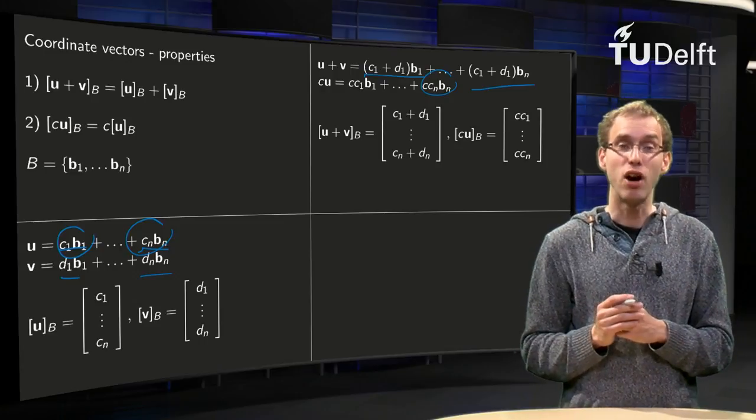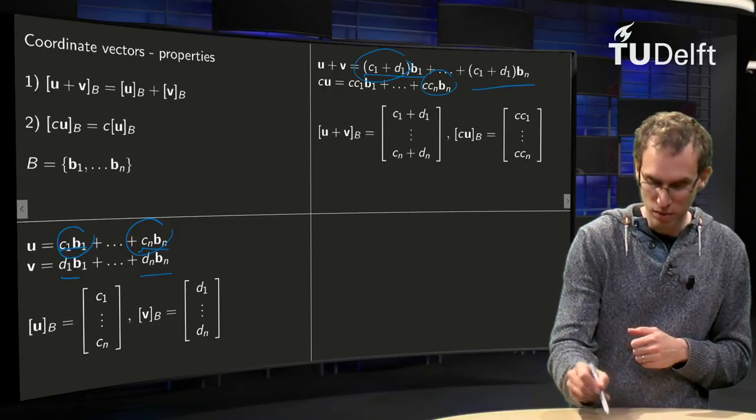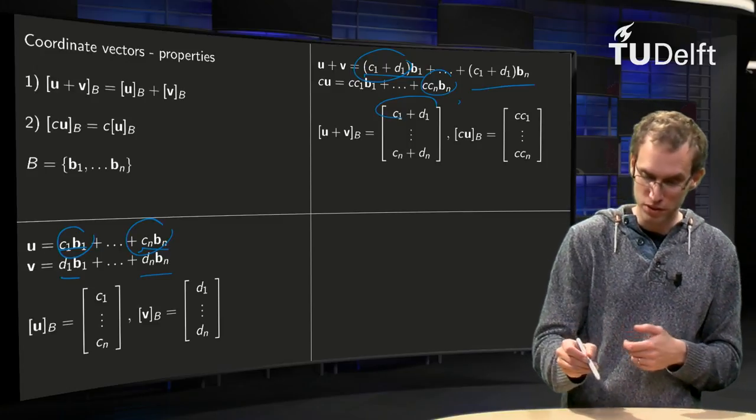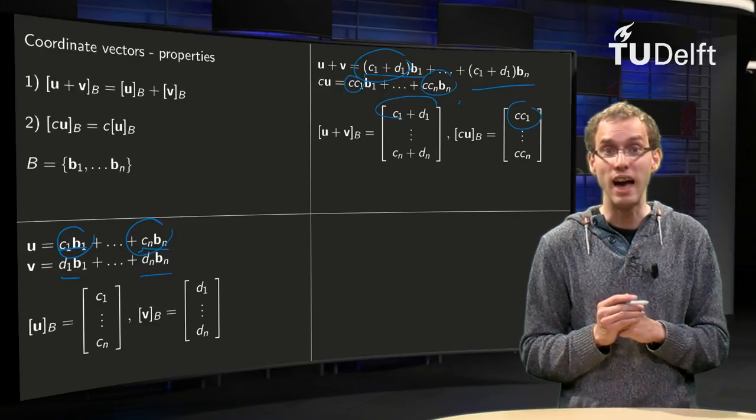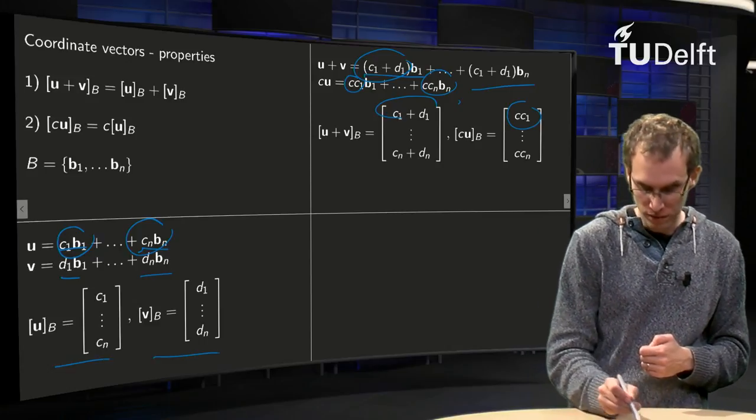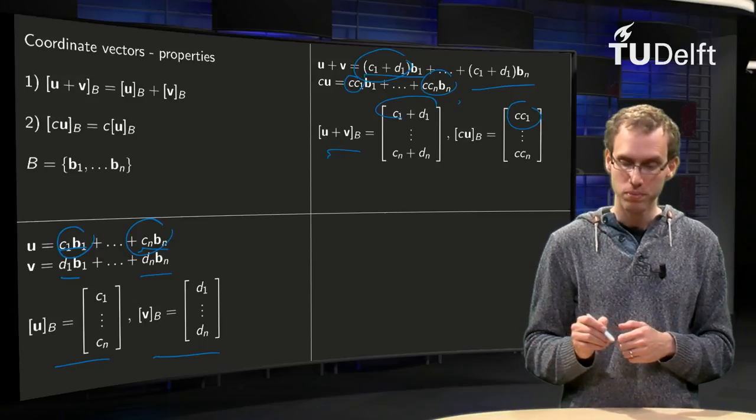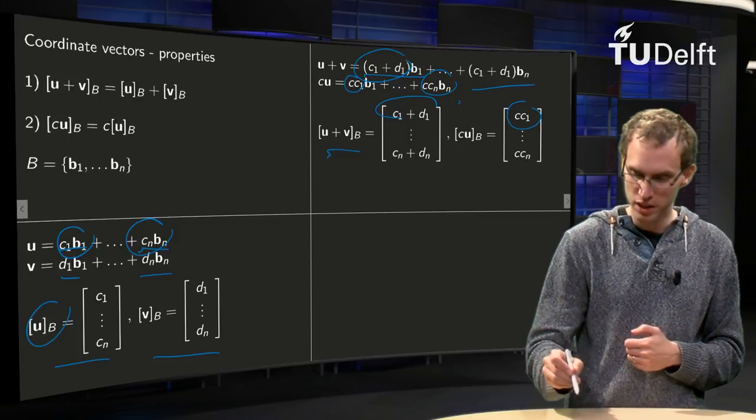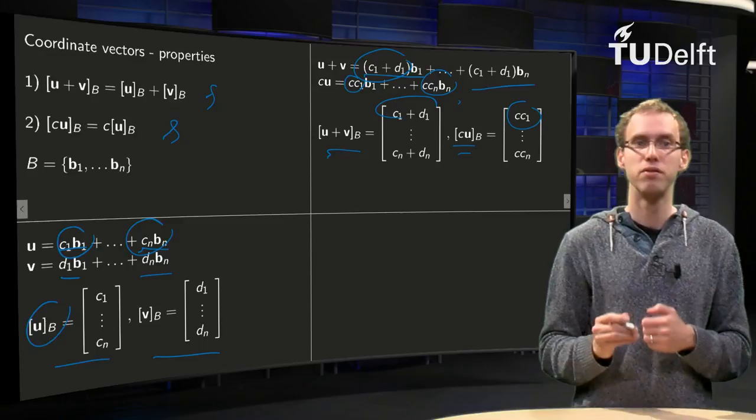And then we can read off the coordinate vectors. The first component of u plus v equals c1 plus d1 over here, et cetera, et cetera, up to cn plus dn, and the first component of c times u equals c times c1, et cetera, et cetera, up to c times cn. And then we see that ub plus vb equals u plus v in the basis B, and that if you multiply this ub by a scalar c, you exactly get cu in the basis B. So those properties are indeed fine.